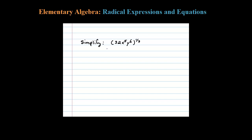Here we're asked to simplify this expression with a rational exponent. Now we know those are radicals, so the denominator is the index. So we have the cubed root of 32x to the fifth y to the sixth, all raised to the one power.